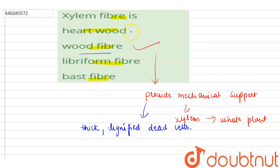Because heartwood is basically the central wood of tree, and libriform fibers are the xylem fibers, and bast fiber is the phloem fiber, not xylem fiber. So the correct option here is wood fiber. Xylem fiber is wood fiber.